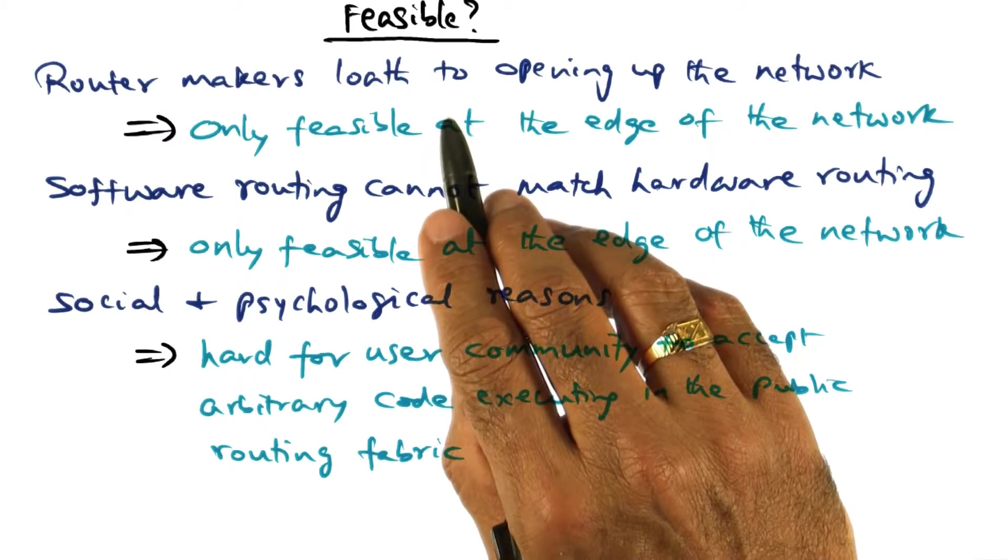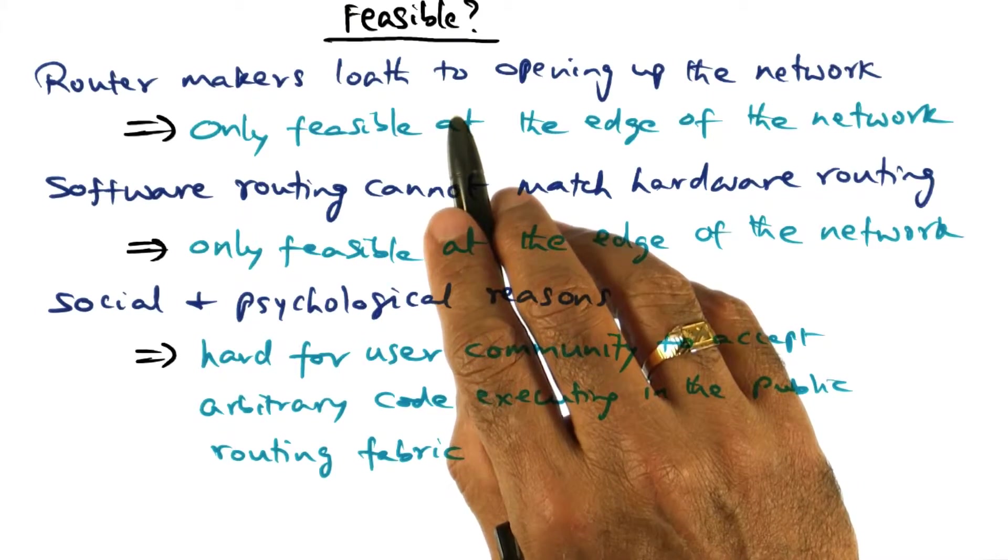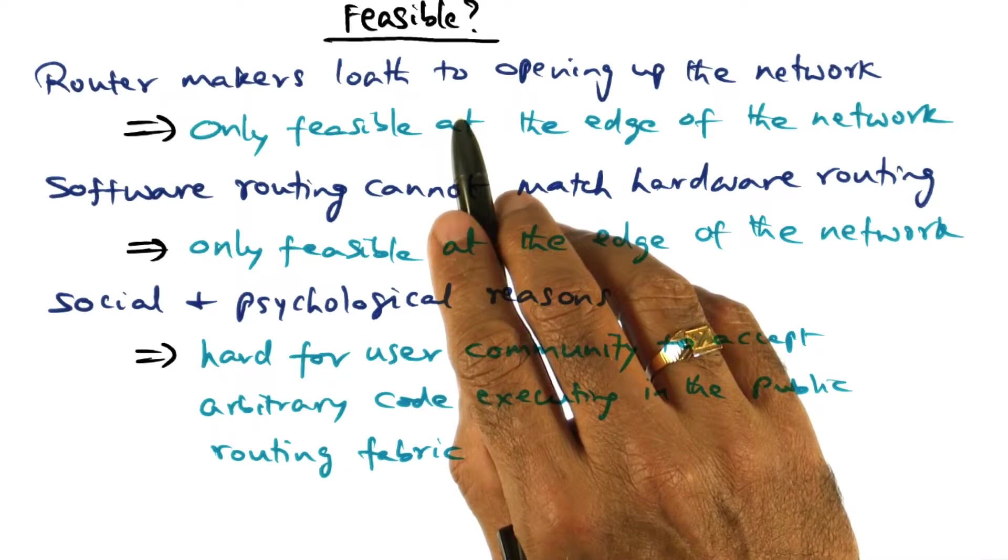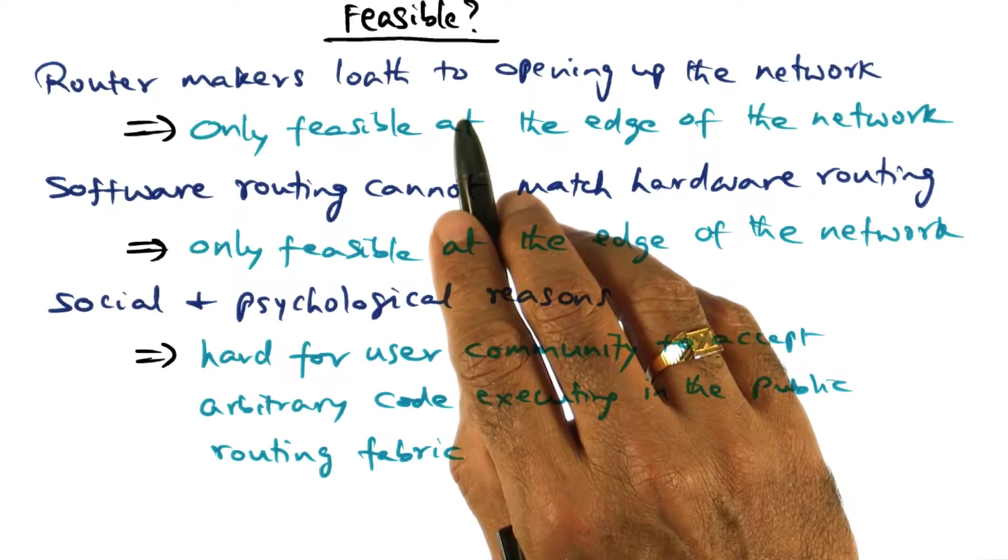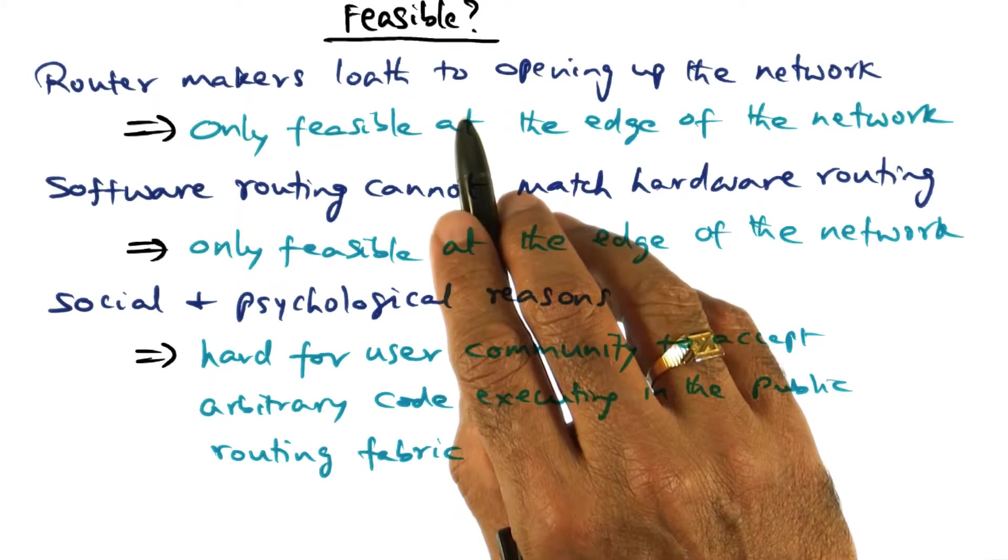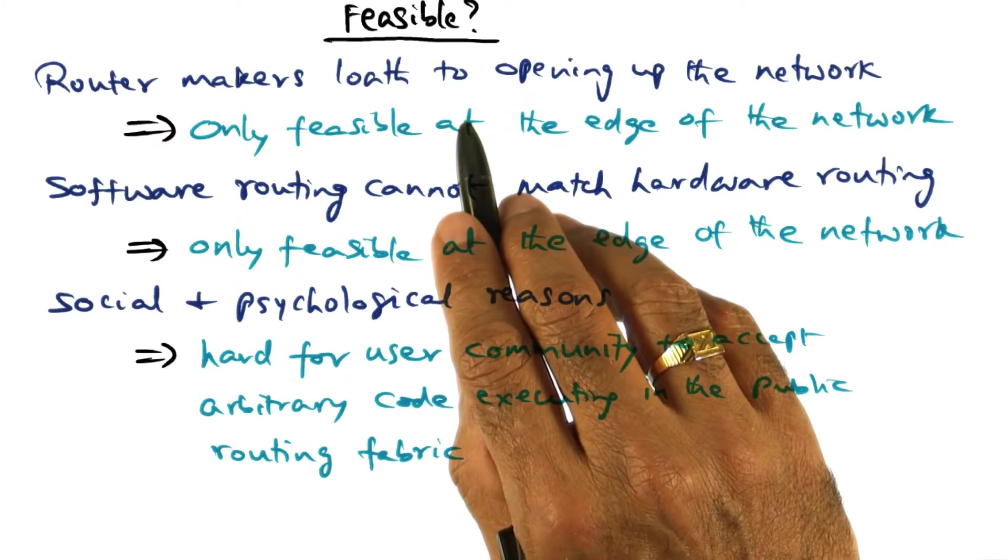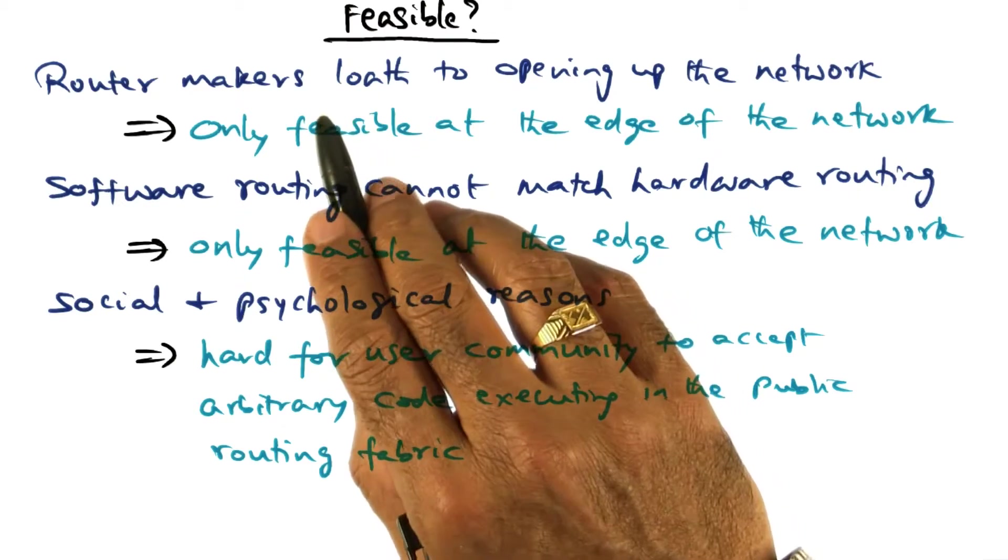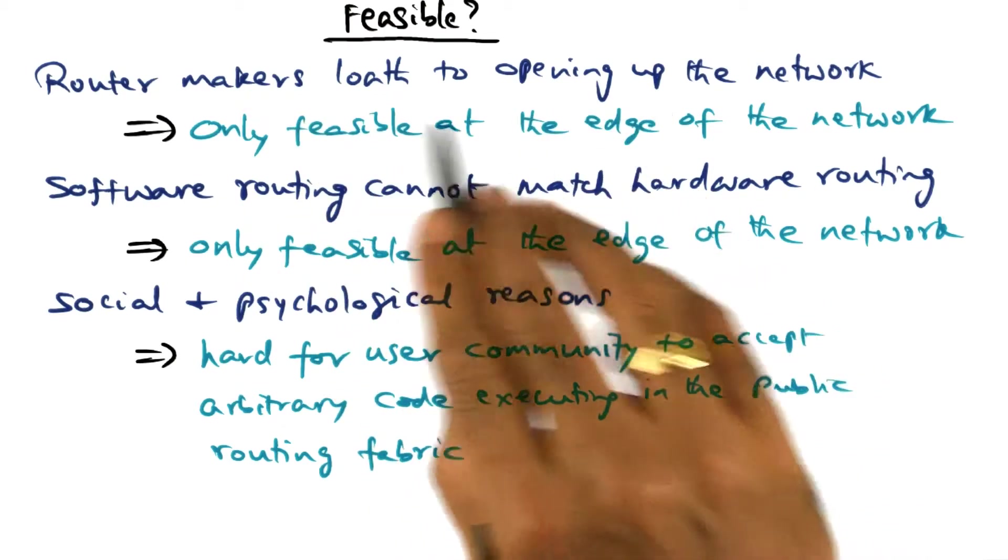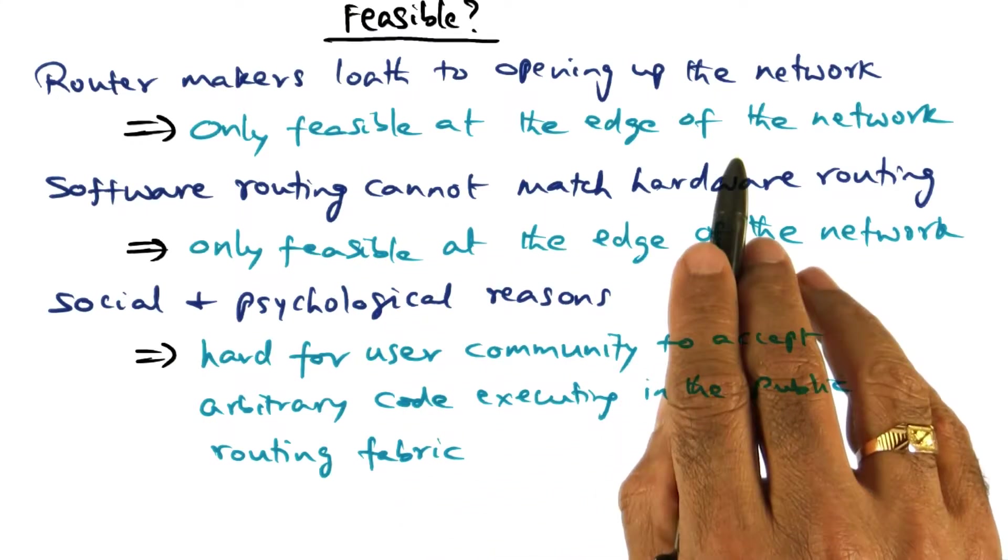While the idea of active networks is very fascinating - that we can be frugal about the resources we use in the internet for different network flows, and we can actually virtualize the physical infrastructure by implementing our own idea of what the network flow should be for our packets - seems very attractive. But really, it's not going to be feasible given that we have to open up the network. So it's going to be feasible only at the edge of the network.